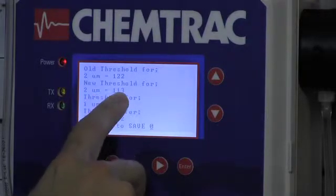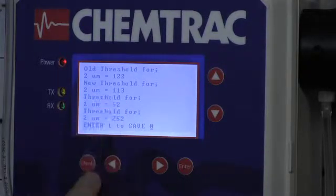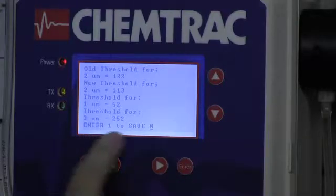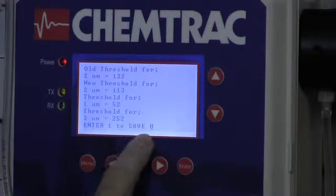What we want to make sure is that the 2 micron threshold never overlaps the neighboring threshold settings. If it did, then something is wrong with the calibration or the sensor. So now we're going to press enter. We're going to actually enter 1 to save.